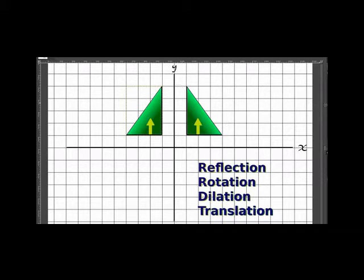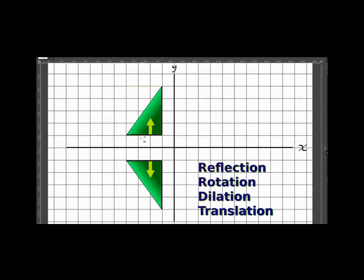Now, we don't have to always reflect across the y-axis. This is reflected across the x-axis. This is a reflection, just like a mirror. This point here would correspond to this point here. This point here would correspond to this point here. This is a reflection across the x-axis.